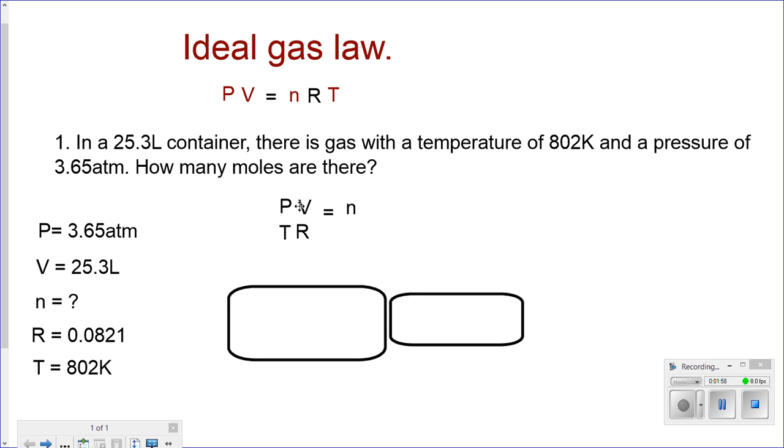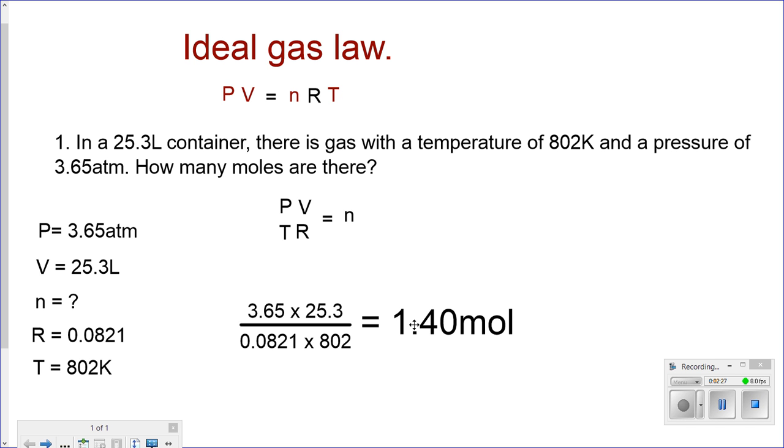Now I have pressure times volume divided by T times R equals n. Plug in the values: 3.65 times 25.3 divided by 0.0821 times 802. Multiply the top, divide by everything at the bottom. Make sure you make the right calculations. That gives me 1.40 moles. That is the answer.